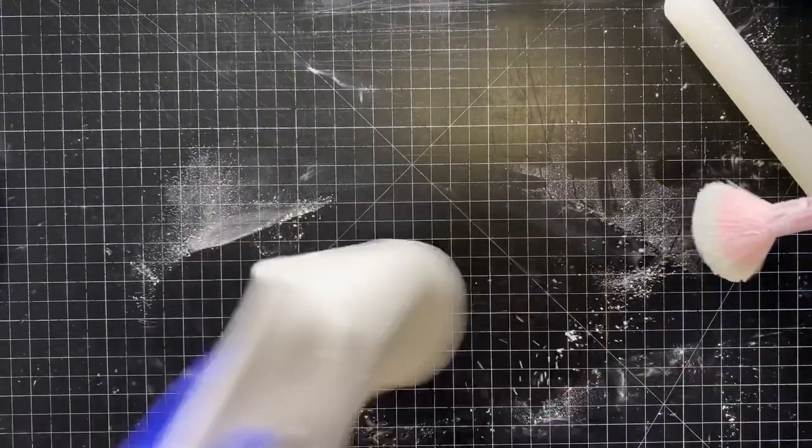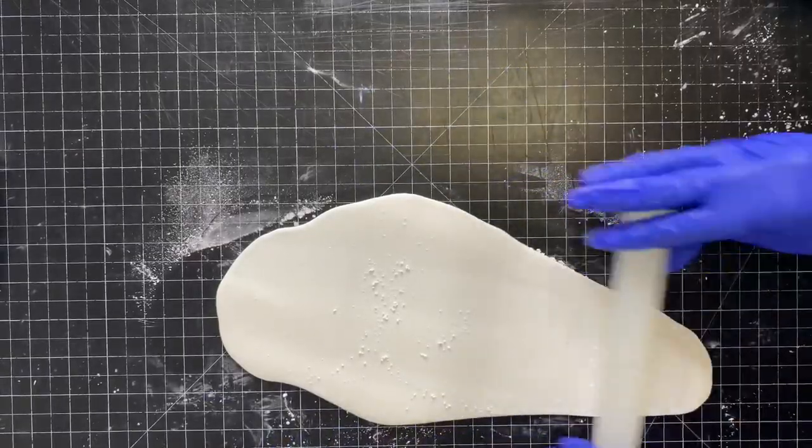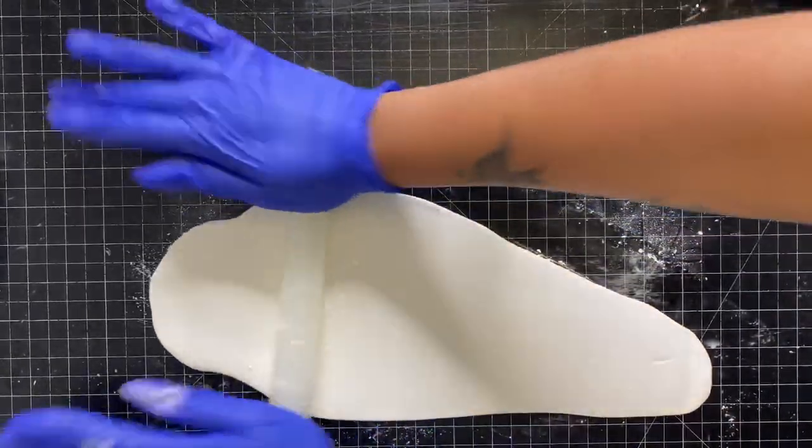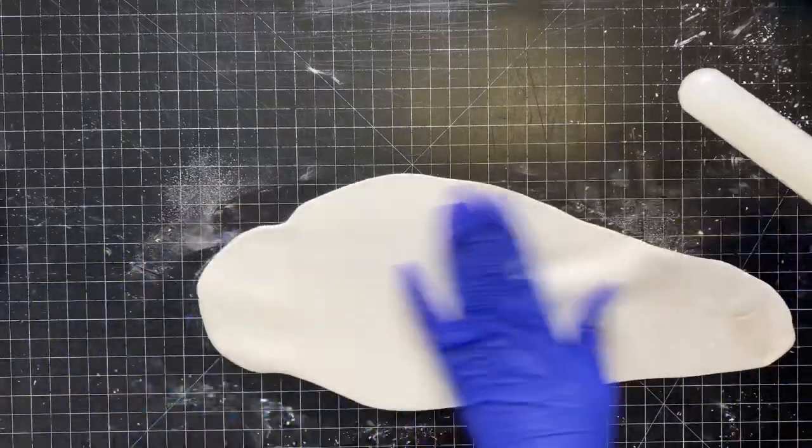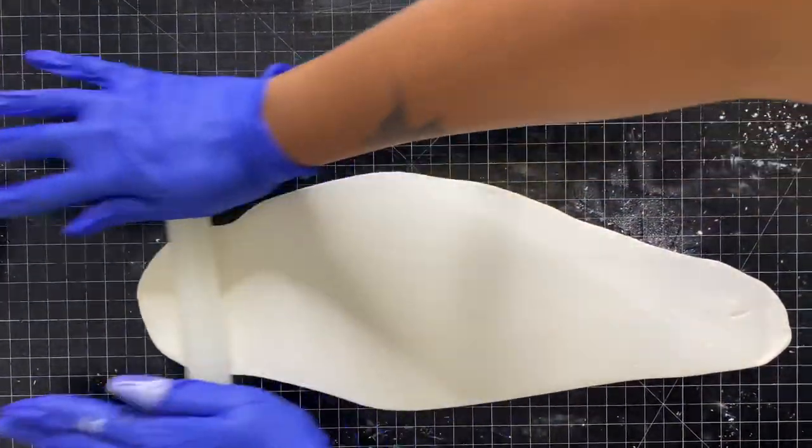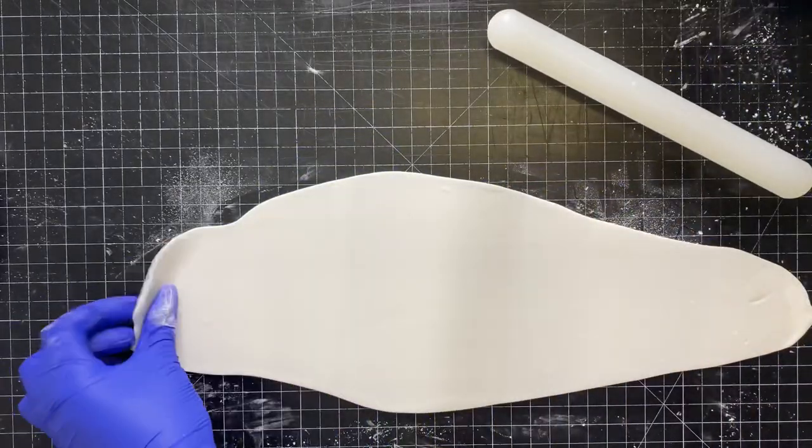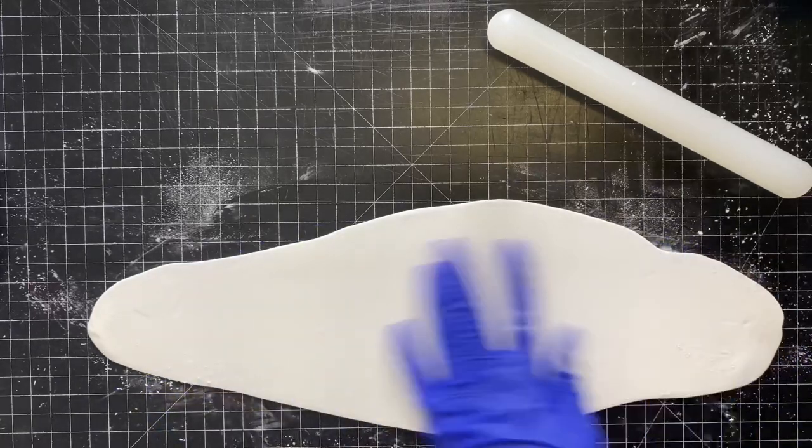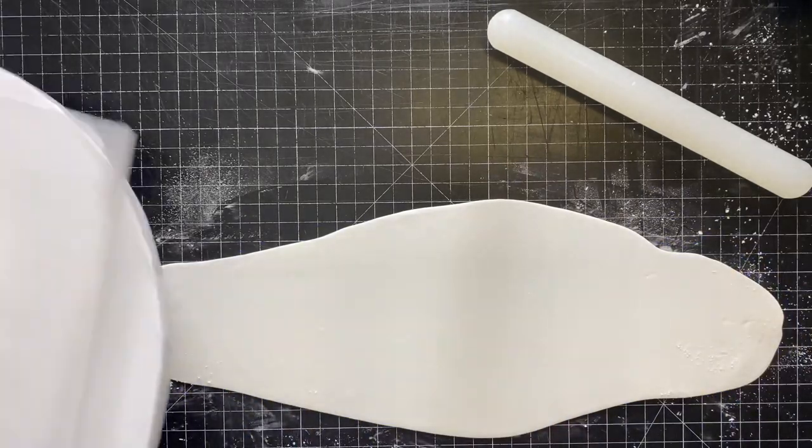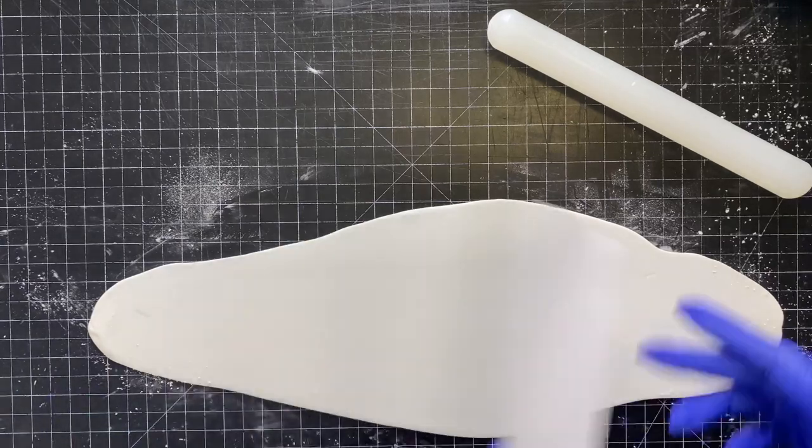I find that when I use powdered sugar it dries out my fondant a lot faster. But use what works for you because I feel that it depends on the mat, the surface that you're working on. I know some people that roll out fondant with Crisco, that doesn't work for me. I think it may be the mat that I'm using, so just do what works for you depending on what surface you're rolling your fondant on.